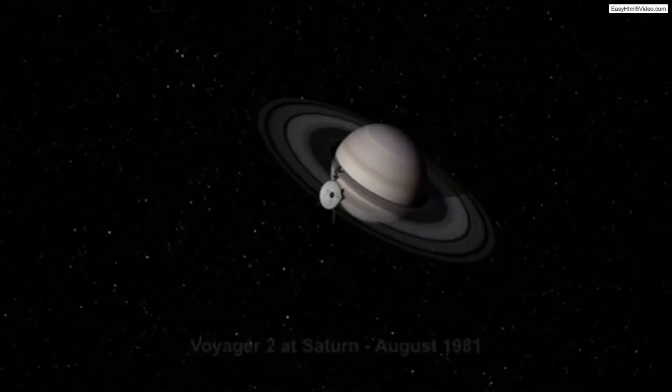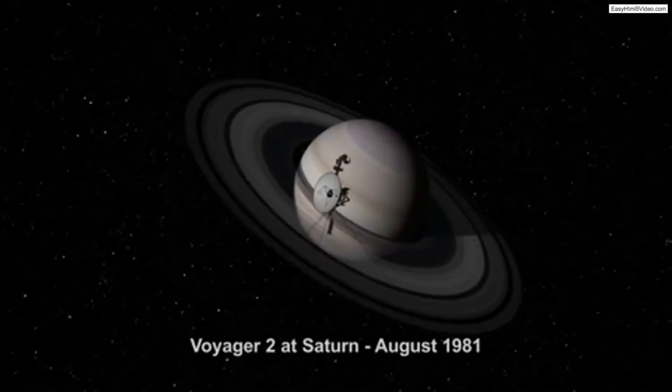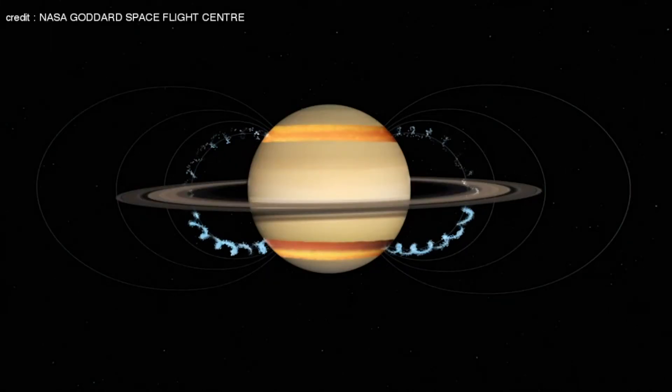We have known about ring rain since the 1980s when NASA's Voyager mission first noticed mysterious dark bands that turned out to be ring rain caught in Saturn's magnetic fields. Back then, researchers estimated the rings would totally drain in 300 million years.